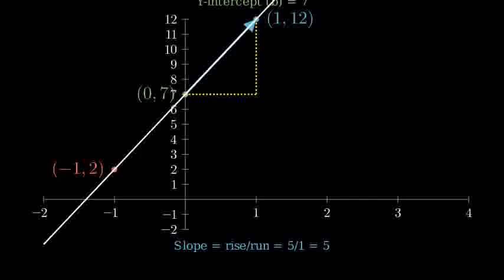Let's verify that our line is correct by checking its key features. It passes through the y-intercept at 0 comma 7, it has a slope of 5 meaning it rises 5 units for every 1 unit it moves right, and it passes through all our calculated points.